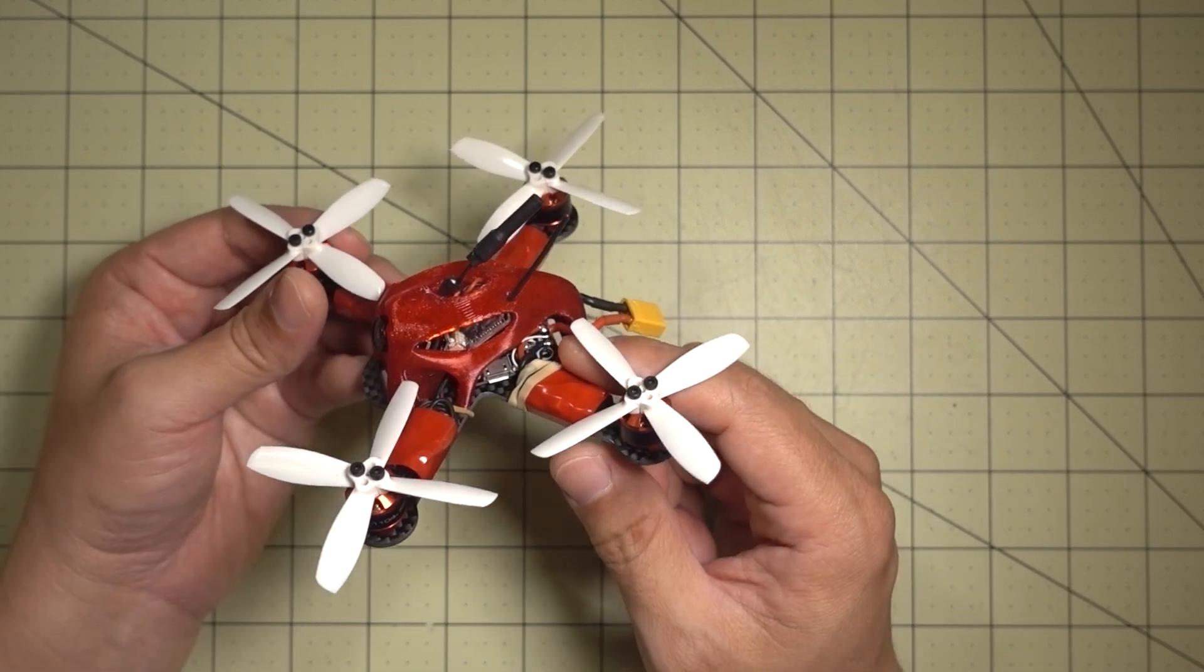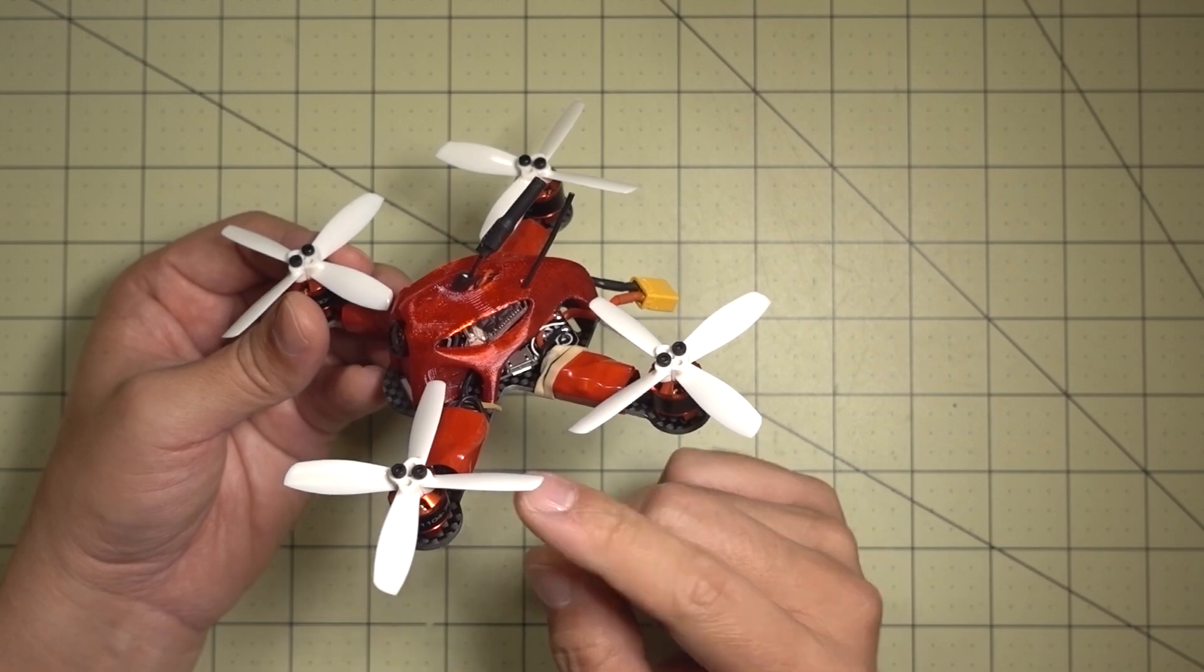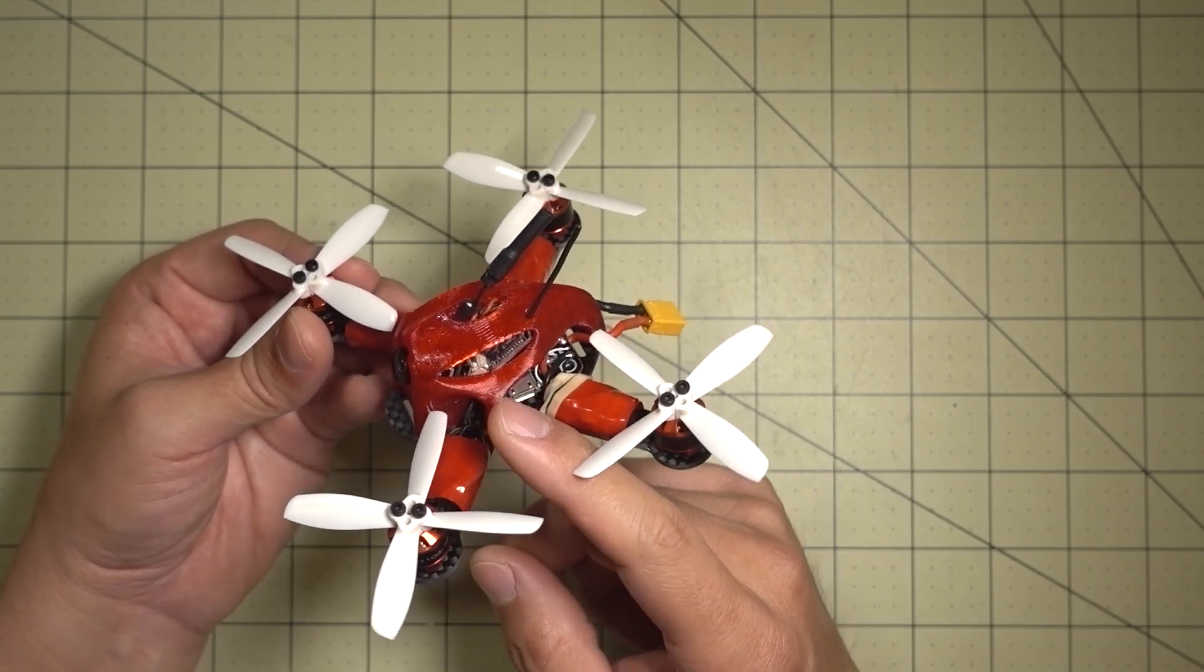For brownouts, as I mentioned, you get three different things that can happen. You get the flight controller resetting, you can get your receiver to failsafe, or you get your camera to cut out.